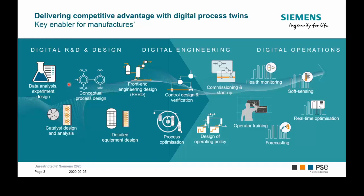Once the PFDs and P&IDs are ready and the design of the process plan is finished, the engineering of the plant begins — we move into the digital engineering phase. This means the design of the automation, control structure, the logic, and the likes.